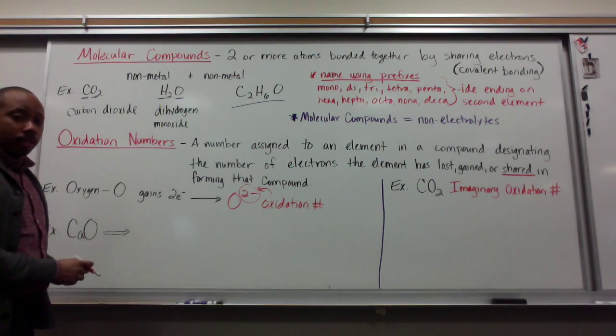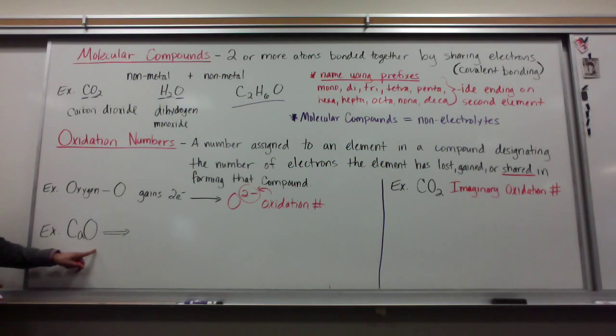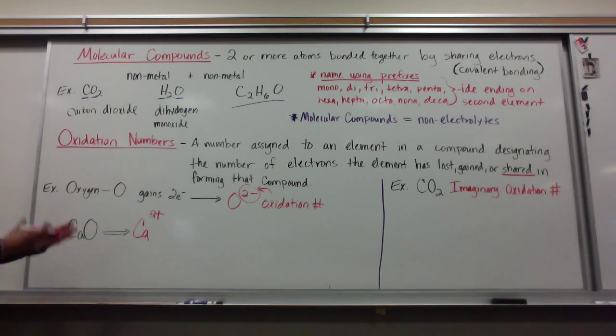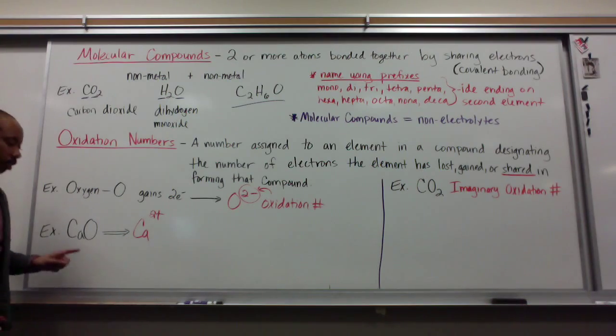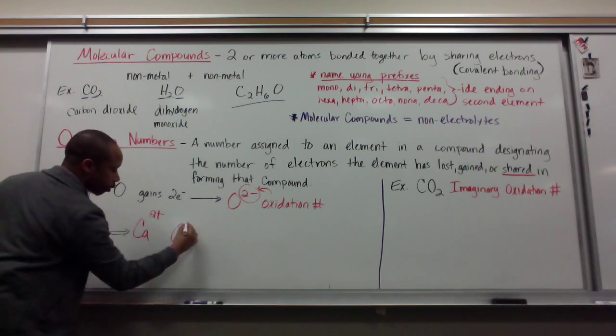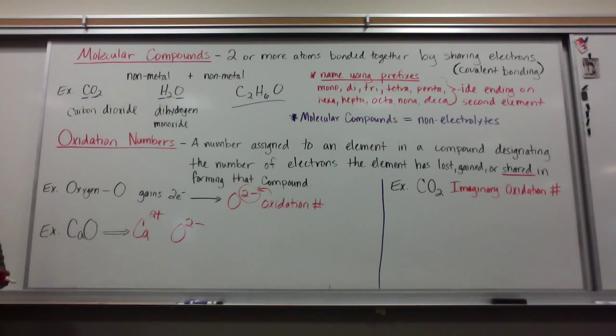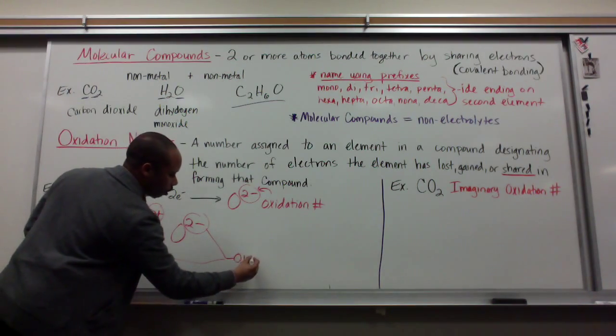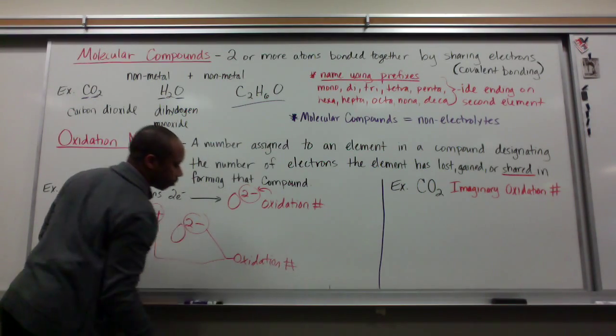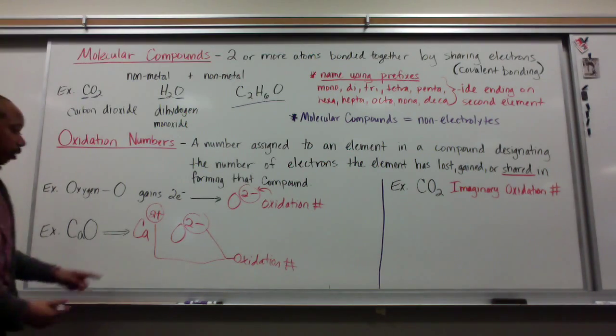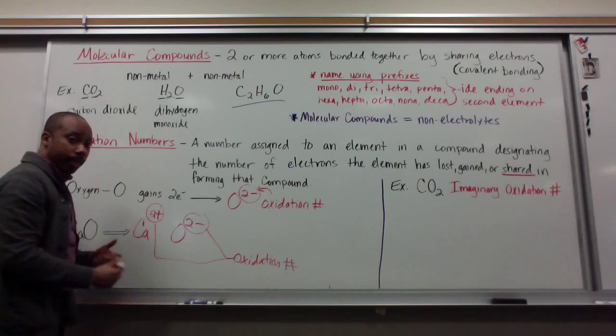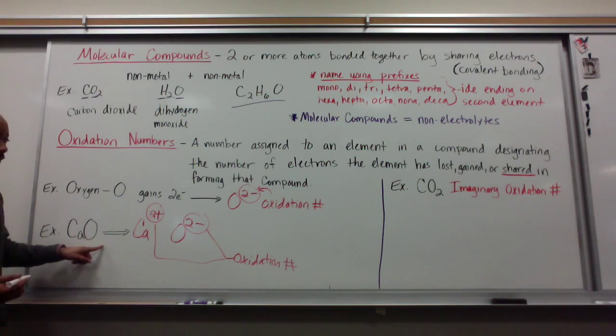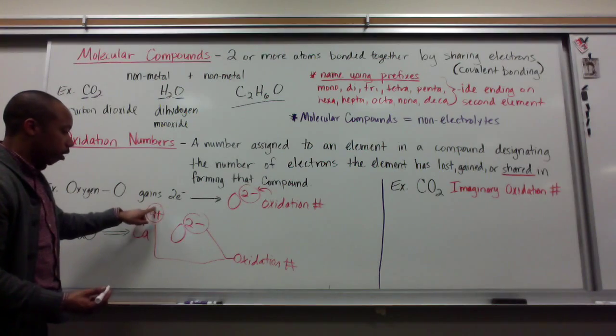Now, how does this apply with compounds? My example down here, calcium oxide. I know that calcium, when it forms an octet, will give away two valence electrons and form Ca2+. Oxygen is going to form O two minus, because it gains two valence electrons. So, two plus and two minus are oxidation numbers. Notice, when these two oxidation numbers add to each other, they cancel each other out. That's why we have no subscripts here.